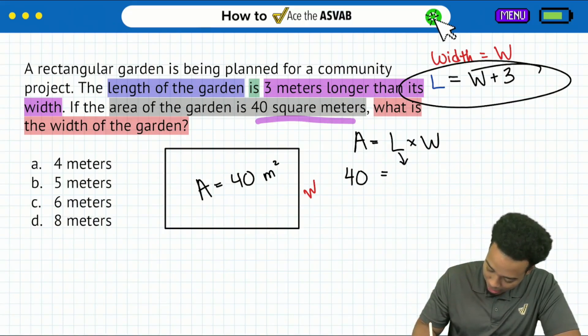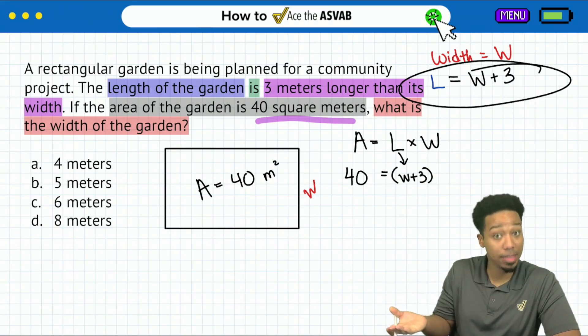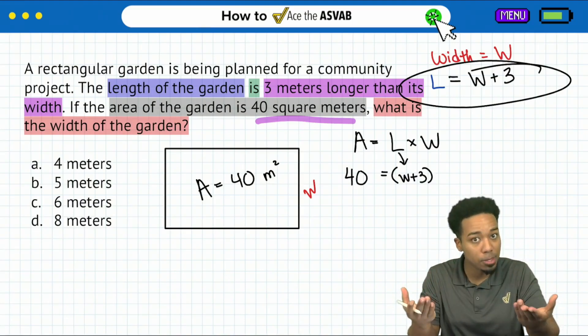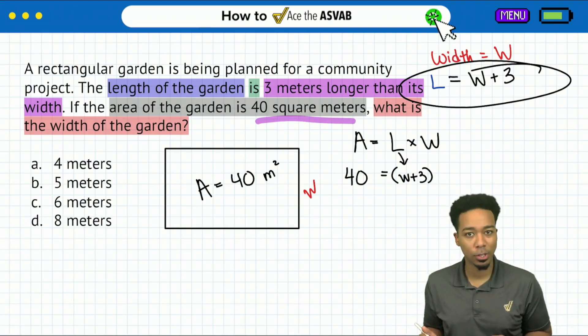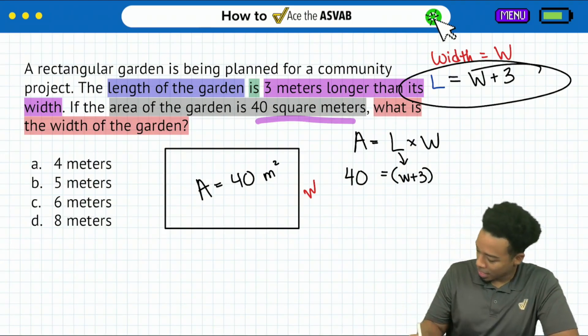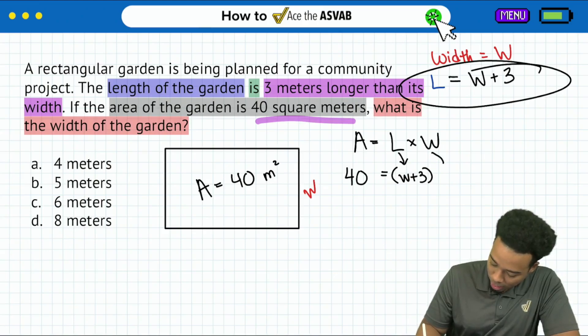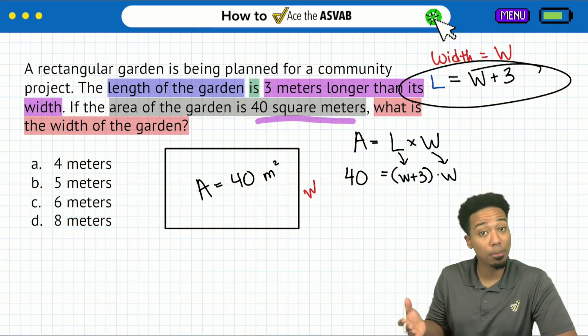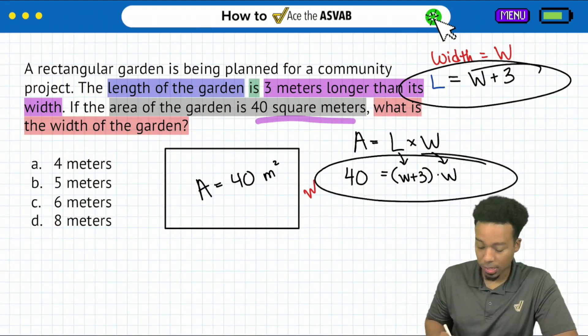I know that the length is the width plus three. So that's what I'll do. I'm going to replace the length with W plus three because that's what the length is. We know that it's the same thing. We're allowed to substitute or replace into the other equation. Now what we'll do is we'll go ahead and write W for width because it's still W. And now our job is going to be to solve this equation.